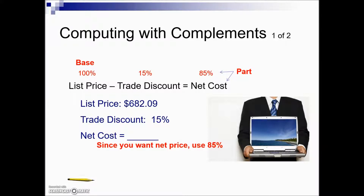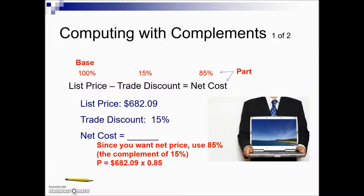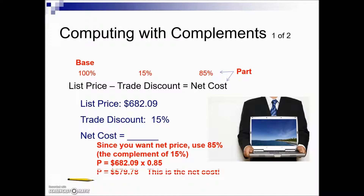We want to use 85% as our rate to find the part, and the 85% is coming from the complement of 15% — 100 minus 15 is 85. Taking that 85% as our rate times our base, the list price, gives us the net cost.